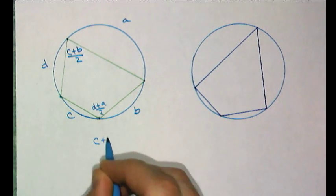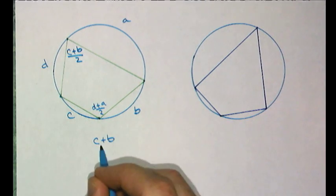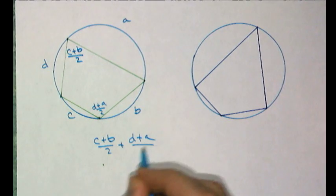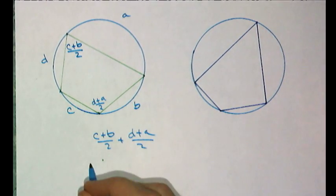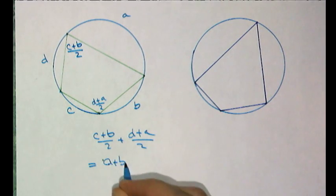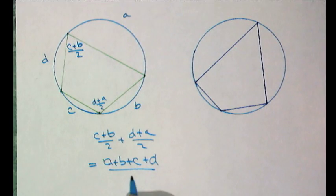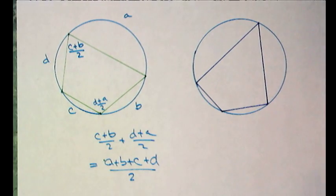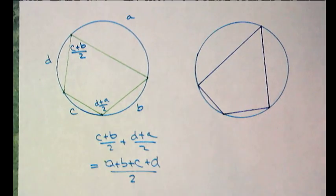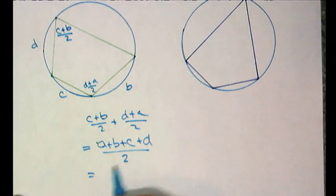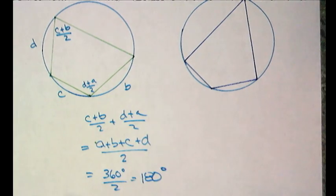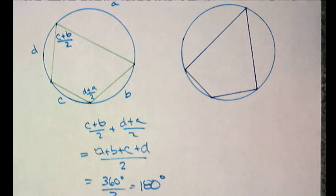I could write this one as a plus b divided by 2, and this one as d plus c divided by 2. But let's just look at these two. If I put those two together, that would be c plus b over 2 plus d plus a over 2. They have a common denominator. That's the same thing as saying a plus b plus c plus d divided by 2. What do you think a plus b plus c plus d is? Yes, that would be 360 degrees. Divided by 2 is 180. What does that mean for my conjecture?